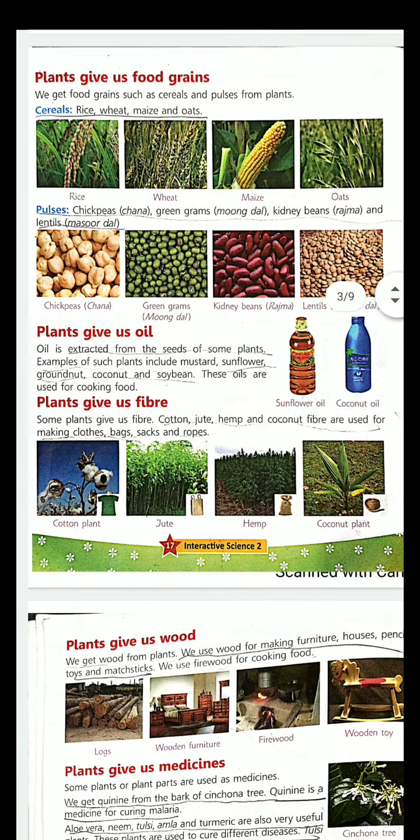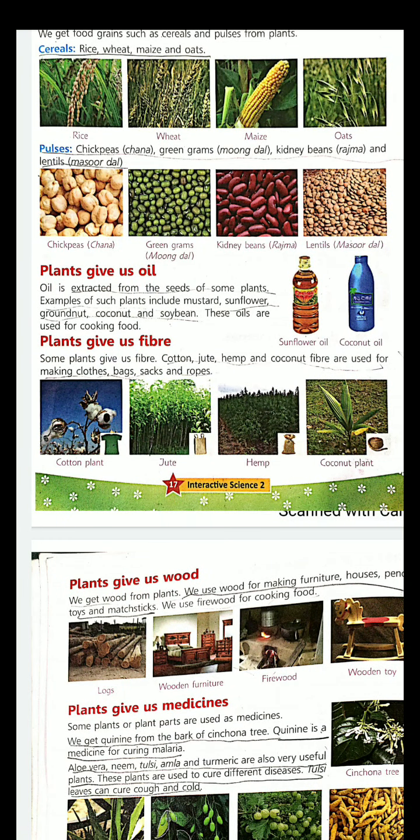Then they give us oils. They give us fibers from different plants like cotton, jute, hemp, coconut. Jute gives us the sack, cotton gives us clothes.